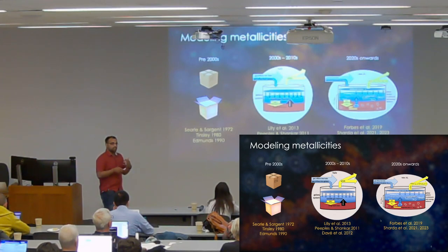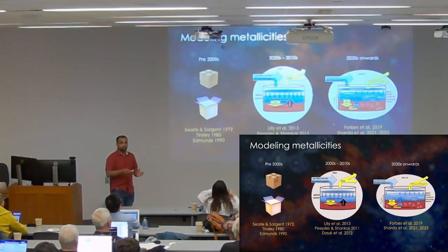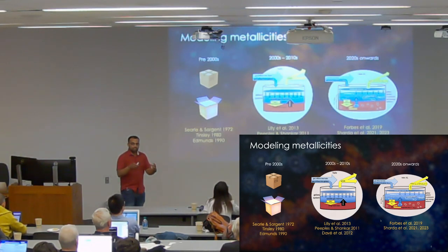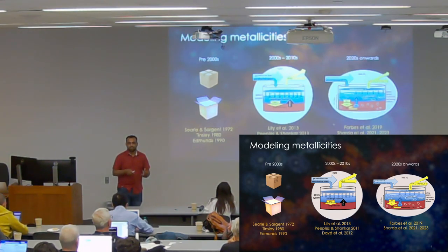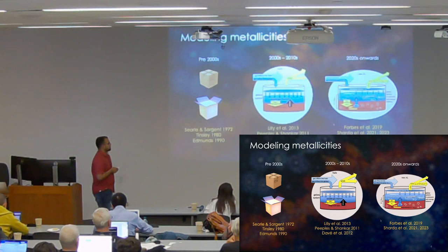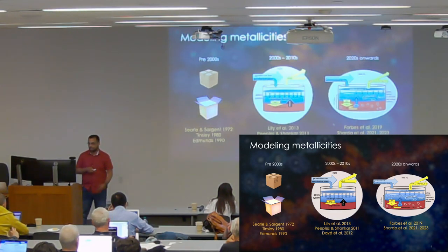But if we want to understand the physics of spatially resolved metallicity distribution or gradients, we need to go a step beyond. And the reason for this is bathtub models are only looking at the content of metals. So, we also need to include processes that do not necessarily change the overall metal content, but they might redistribute metals in the ISM, for example. So, we need a better prescription and understanding of our ISM physics in addition to things that can produce metals or take metals out of the galaxy.